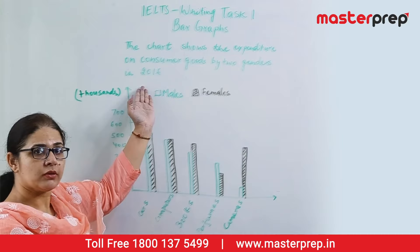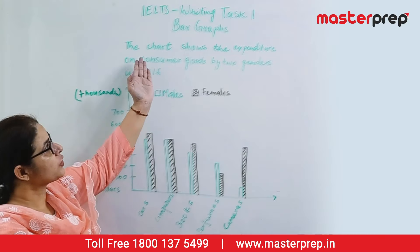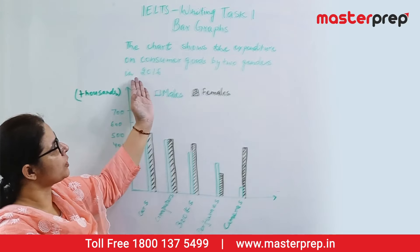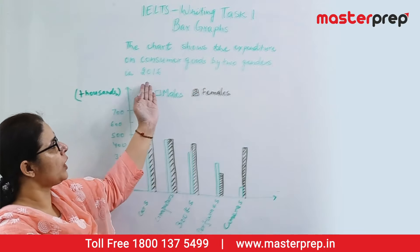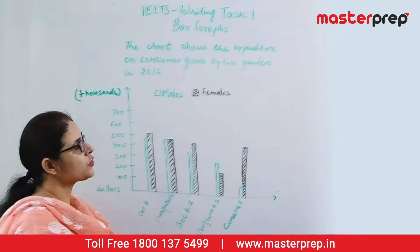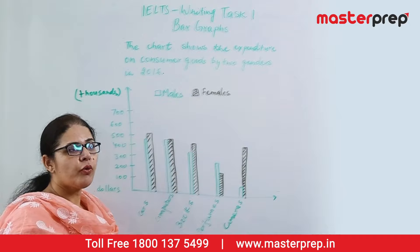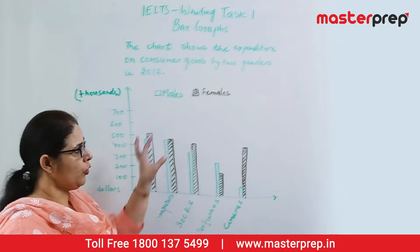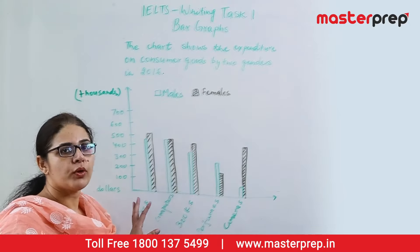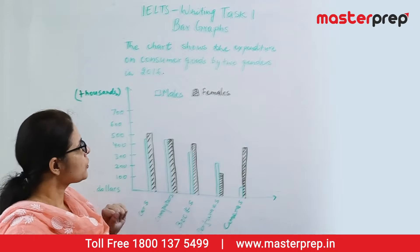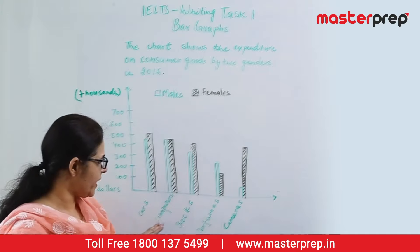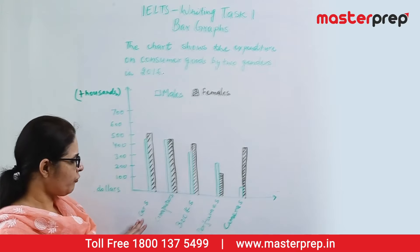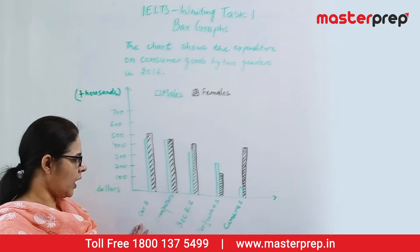So let's first look at what a bar graph looks like. For example, this is a bar graph here. I have this with the question which says: the chart shows the expenditure on consumer goods by two genders in 2016. Now first of all, we are going to look at the graph and understand what it involves.